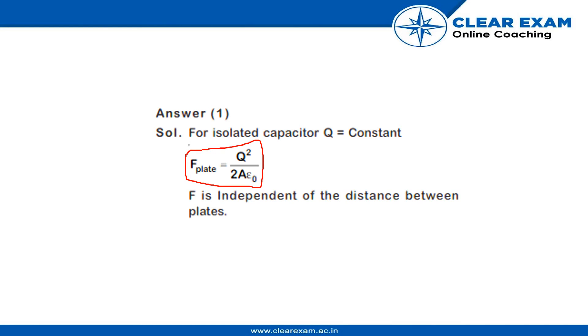None of the values given in the formula are linked to the distance between the plates, because Q is constant, area of the plates is constant, and epsilon naught is a property of the material, not the distance.